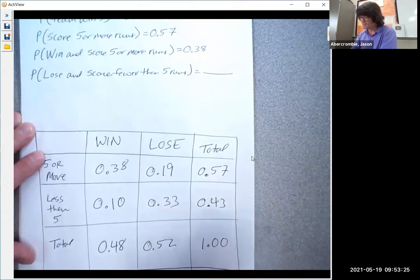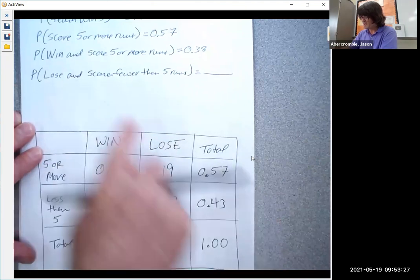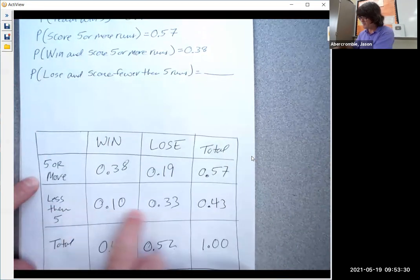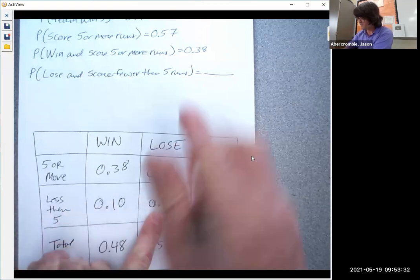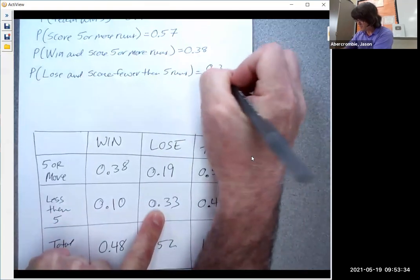So now what's the chance we lose? Here's lose. And score fewer than five runs. Here's less than five. So lose fewer than five is a 33% chance.